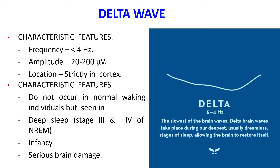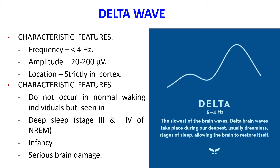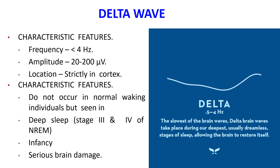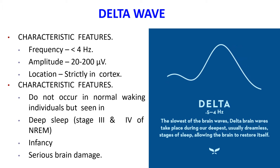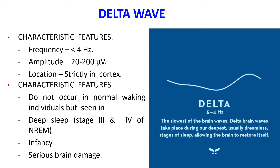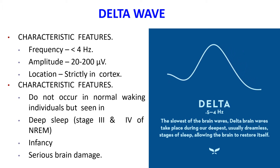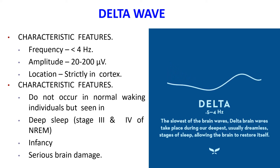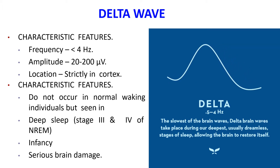Delta waves have a frequency less than 4 Hz and a very high amplitude of 20 to 200 microvolts. Delta waves can be produced by overbreathing and occur strictly in the cortex, not dependent on activities of lower brain regions. They are recorded during sleep, when the cortex is released from the activating influence of lower centers. Delta waves do not occur in normal waking individuals; they are seen in deep sleep (stage 3 and stage 4 of non-REM sleep), in infancy, and in serious brain damage.